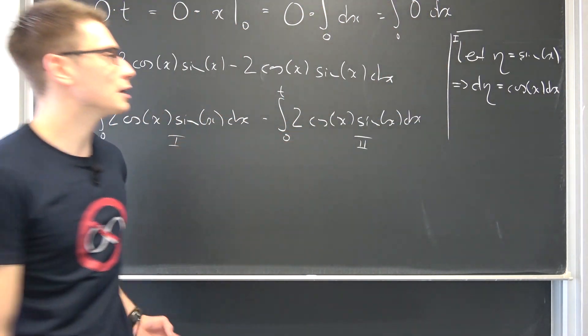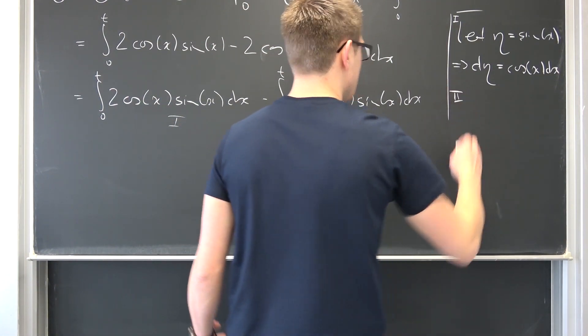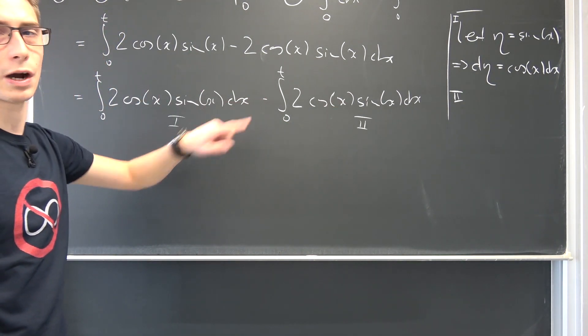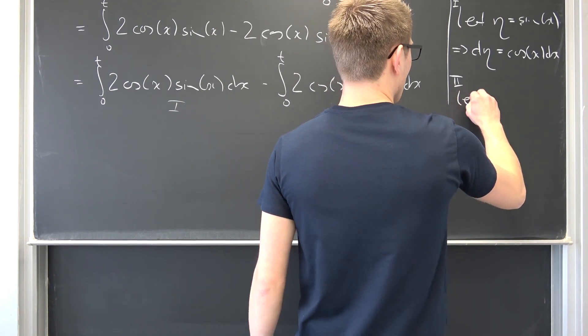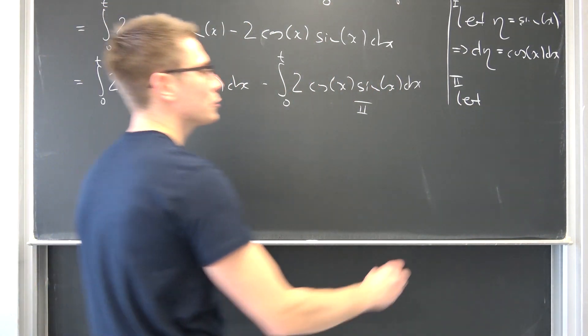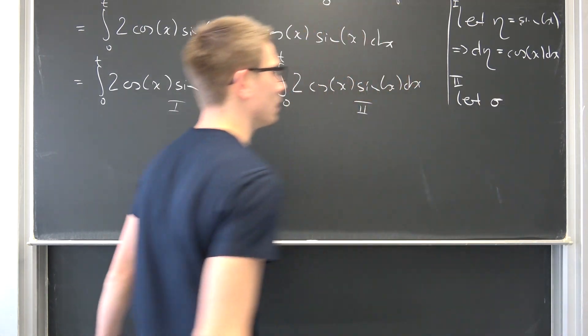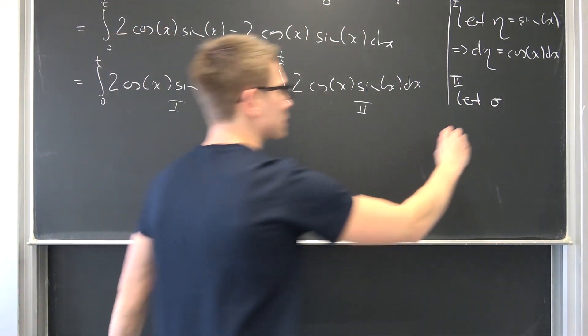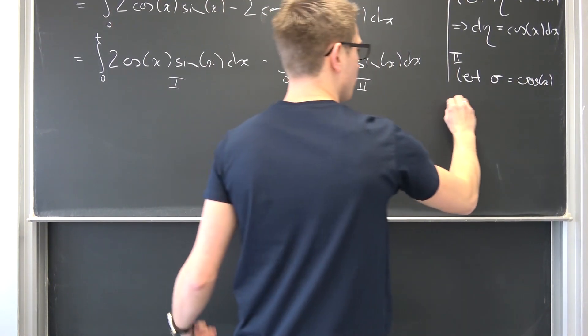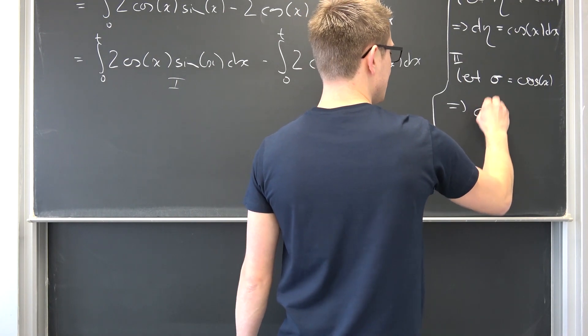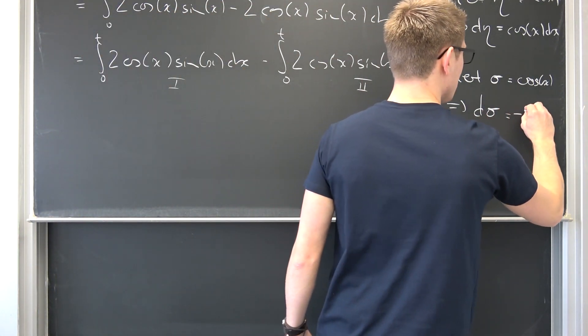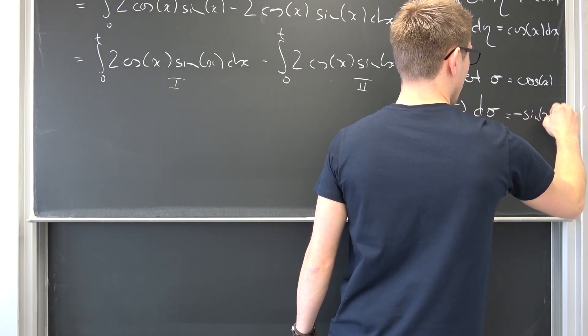On the second one, number 2, we are going to do a similar substitution just with the cosine right here. I'm doing this to get rid of our negative sign. Let sigma be equal to the cosine of x. That also means that if we differentiate that, d sigma is nothing other than the negative sine of x dx.